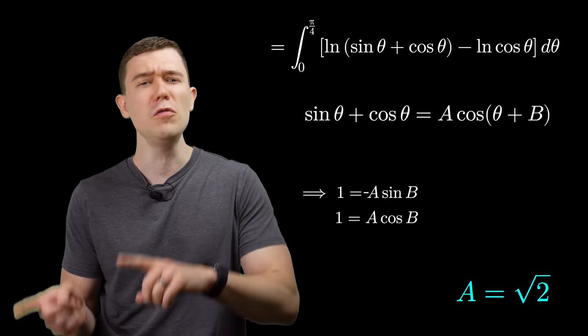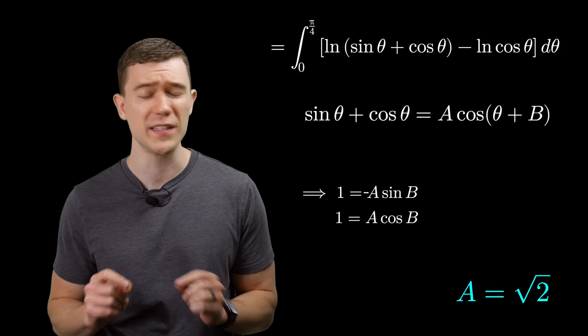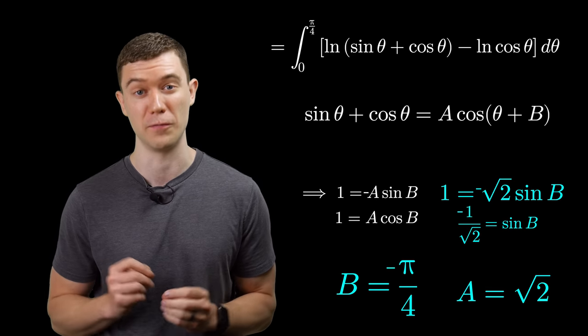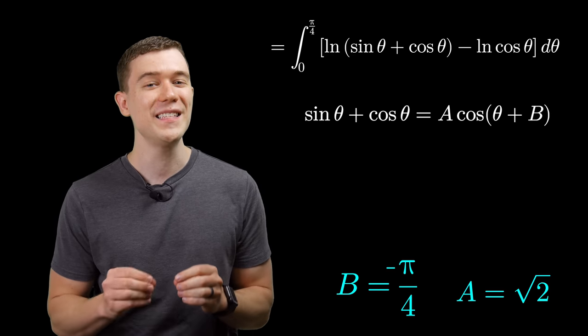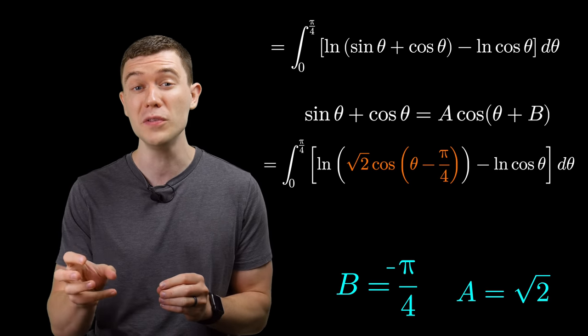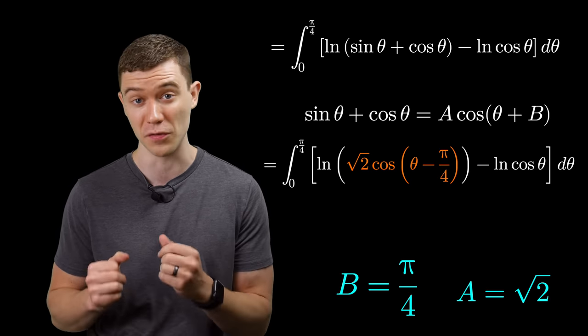Substitute this value back into those two equations and take the inverse trig functions, it'll let us solve for that other constant we were looking for. And so whether you realize it or not, sine theta plus cosine theta can be written as square root of 2 cosine theta minus pi over 4.